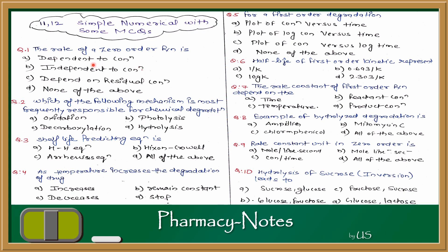First question is: the rate of zero order reaction is? Option A: depends on concentration. Option B: independent of concentration. Option C: depends on concentration at particular time T. Option D: none of the above. If you remember, zero order reaction is independent of concentration — the reaction rate is not dependent on concentration. So the answer will be B: independent of concentration.